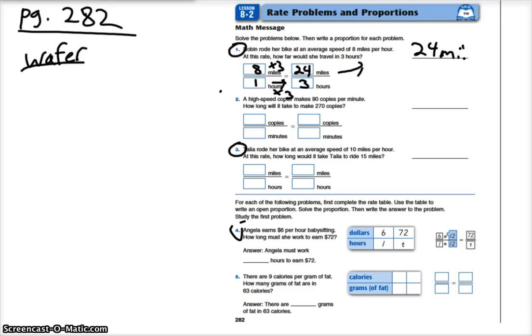Now let's go down to number three. You can work on number two. Talia rode her bike at an average speed of 10 miles per hour. At this rate, how long would it take Talia to ride 15 miles? All right, so let's fill in what we know. We know 10 miles in 1 hour, and we're trying to figure out what about 15 miles, how far is she going to go.